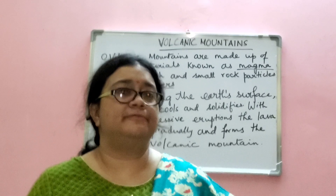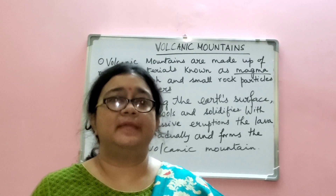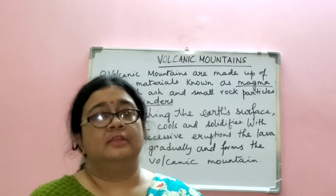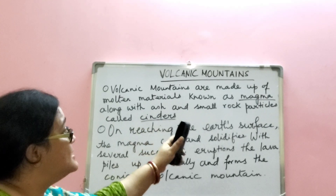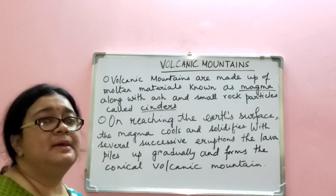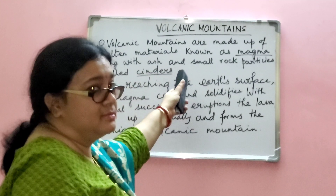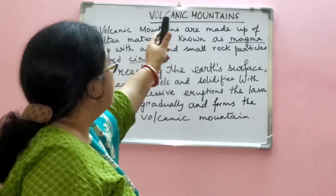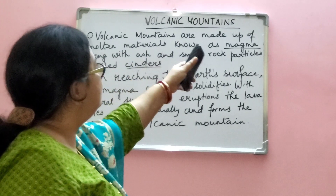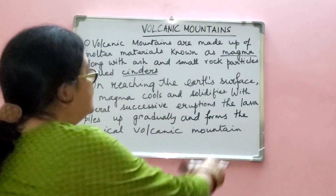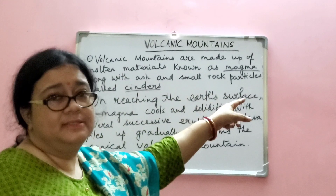The next category is volcanic mountains. Volcanic mountains are also known as mountains of accumulation. Volcanic mountains are made up of molten materials known as magma. Magma is molten rock material along with ash and small rock particles called cinders. So two key terms here are magma — molten rock material — and cinders — small rock particles.